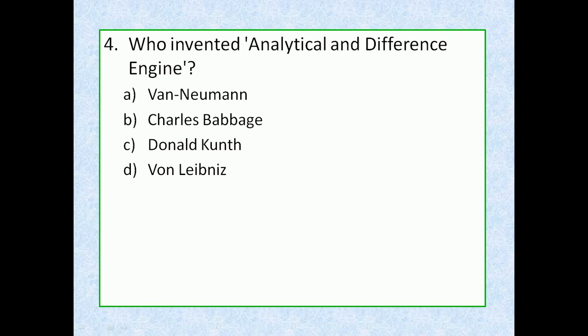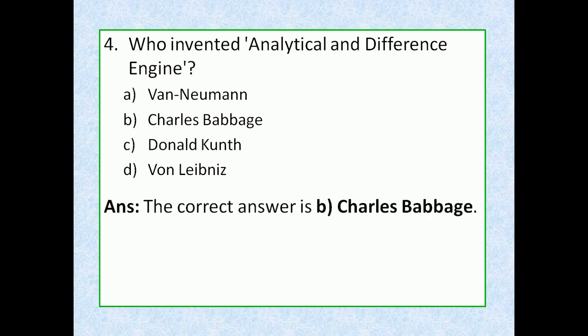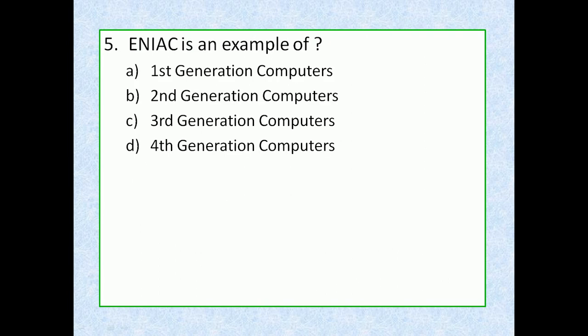Question 4: Who invented the analytical and difference engine? Option A: Von Neumann, option B: Charles Babbage, option C: Donald Knuth, option D: Leibniz. The correct answer is option B, Charles Babbage. He developed the difference engine in 1822, which could calculate various mathematical functions and do polynomial evaluation by finite difference. In 1833, he designed the analytical engine, which could perform all four arithmetic operations as well as comparison, and proved to be the basis of the modern computer.